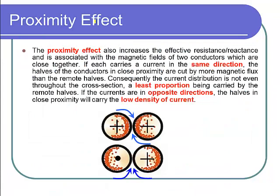The skin effect definition is: it is the tendency of alternating electric current to distribute itself within a conductor such that the current density near the surface is greater than at its core. Now, for proximity effect — as mentioned, skin effect is because of internal flux linkage, while proximity effect is because of external flux linkage. To discuss external flux, we must consider two conductors. When AC current flows through two conductors, the magnetic flux depends on the direction of current flow.